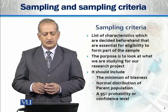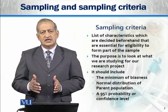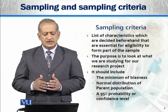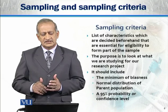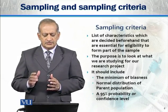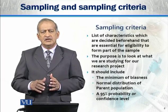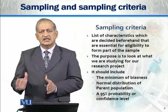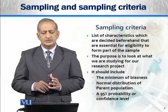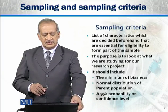The purpose is to look at what we are studying for our research project — the things we want to discuss and study according to the criteria. It should include minimum biasness, because if biasness comes in, it cannot be implemented over the whole population. There should be a normal distribution of the parental population, and it should follow a 95% probability or confidence level.